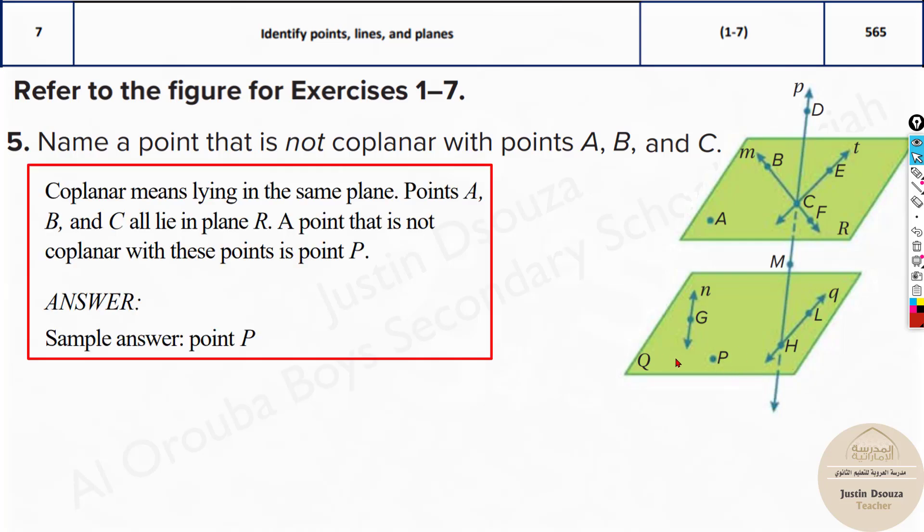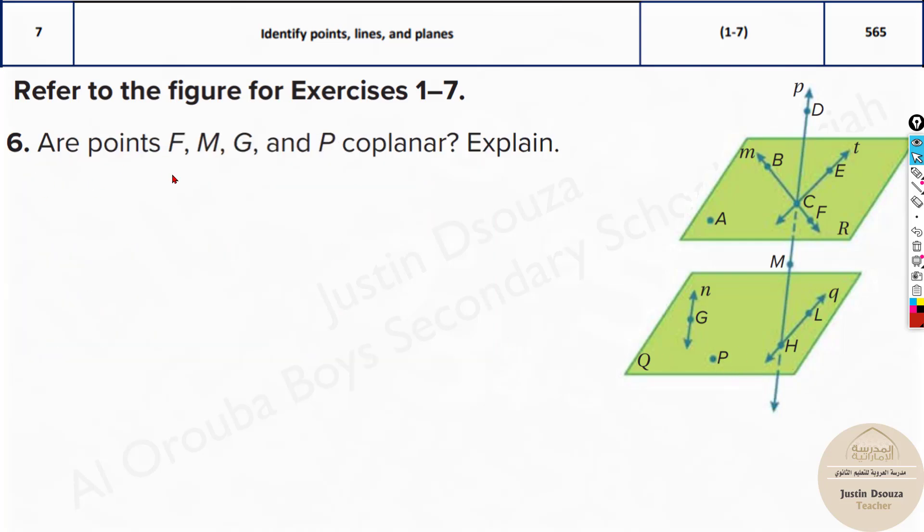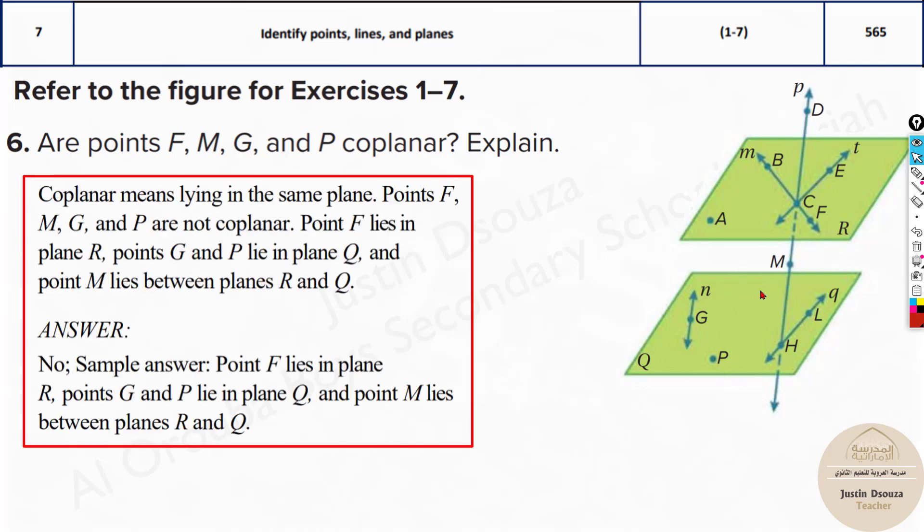And R, F, M, G, and P coplanar. F, where is it over here? M, G, no they are not coplanar because they need to be in the same plane. Over here this is in one plane R and P is in plane Q and this is in between the other two planes. So no, this answer is no.